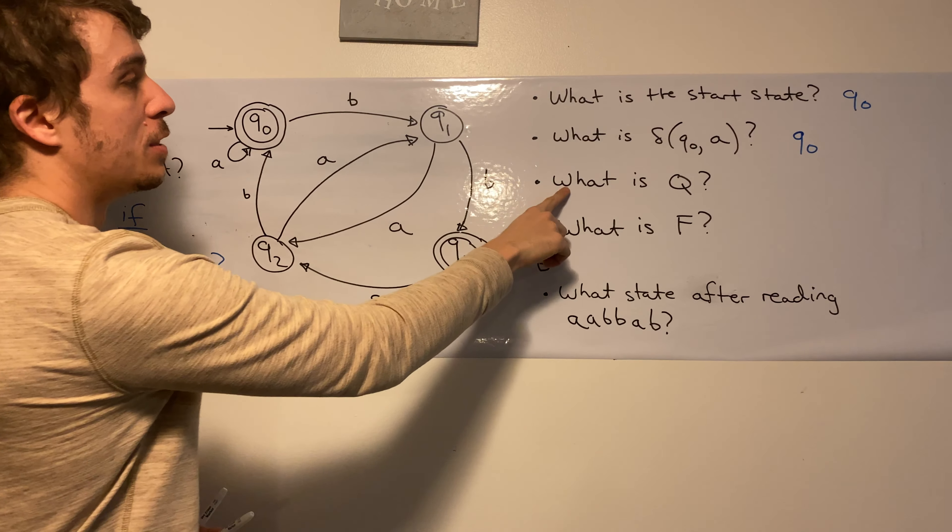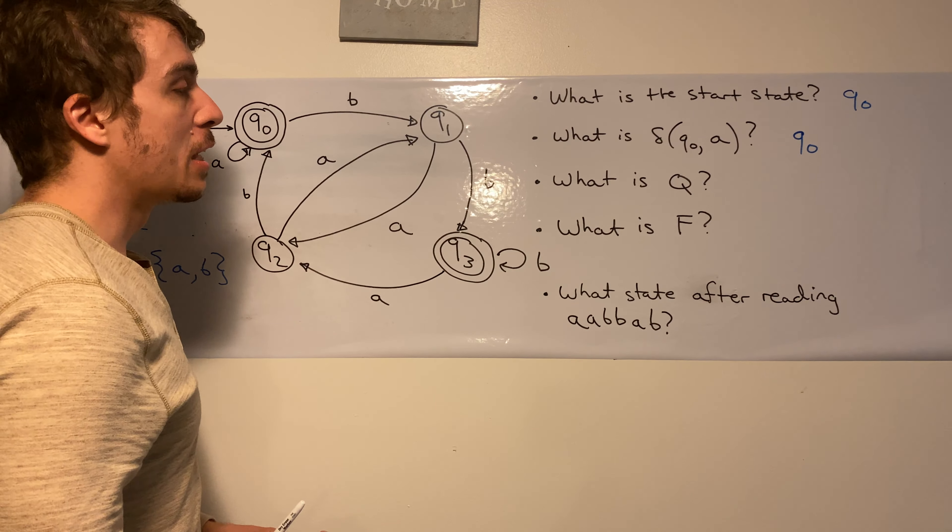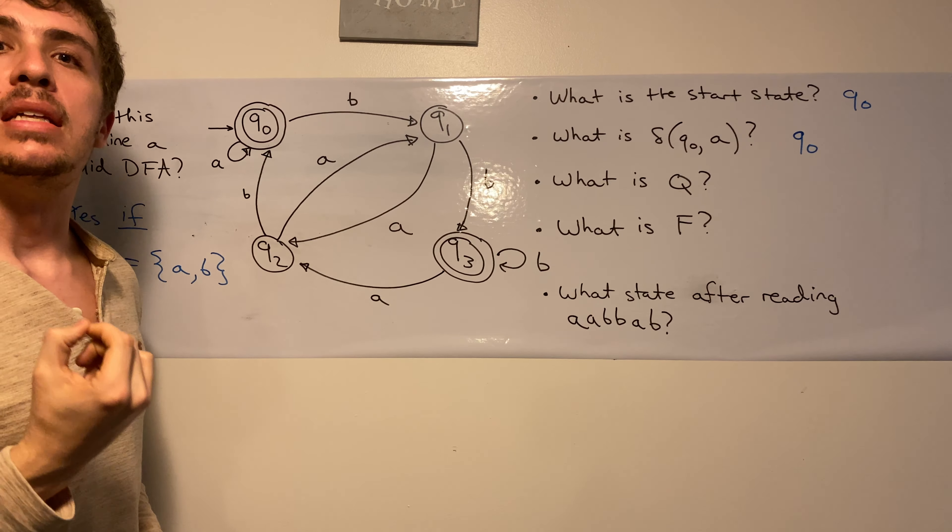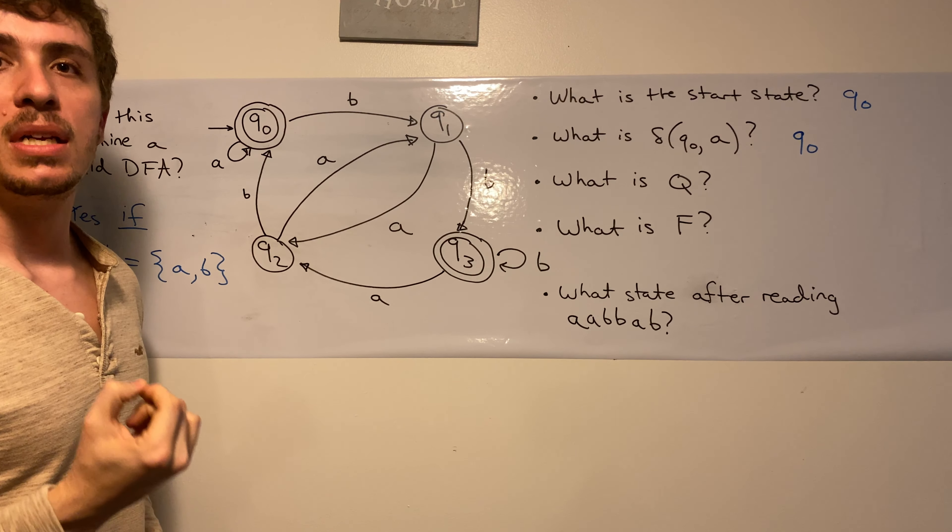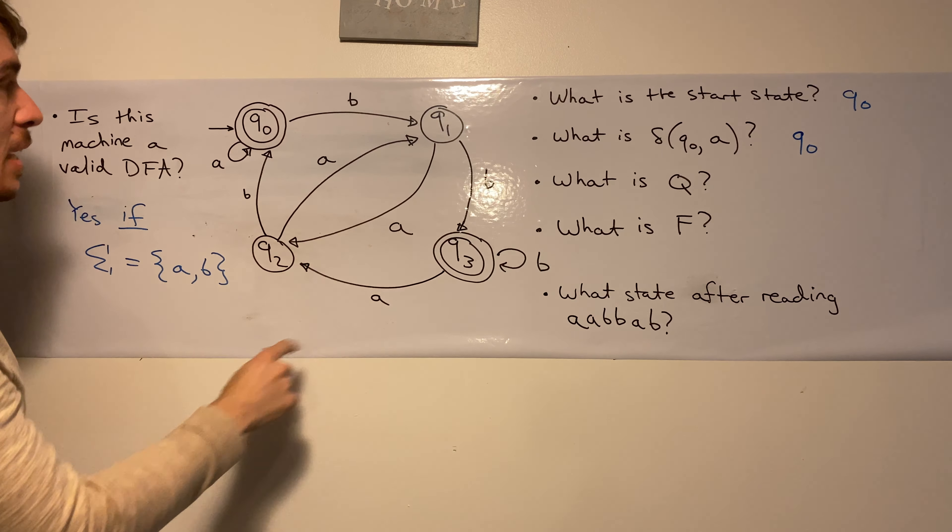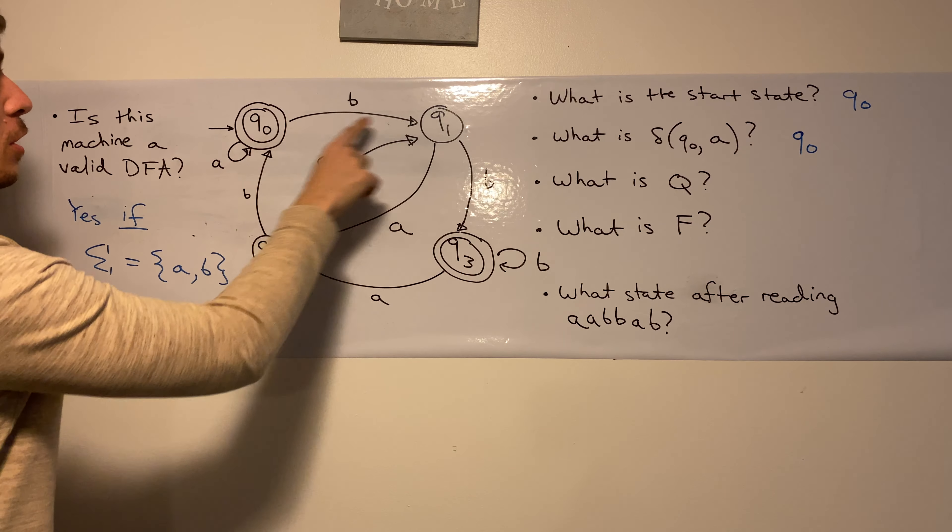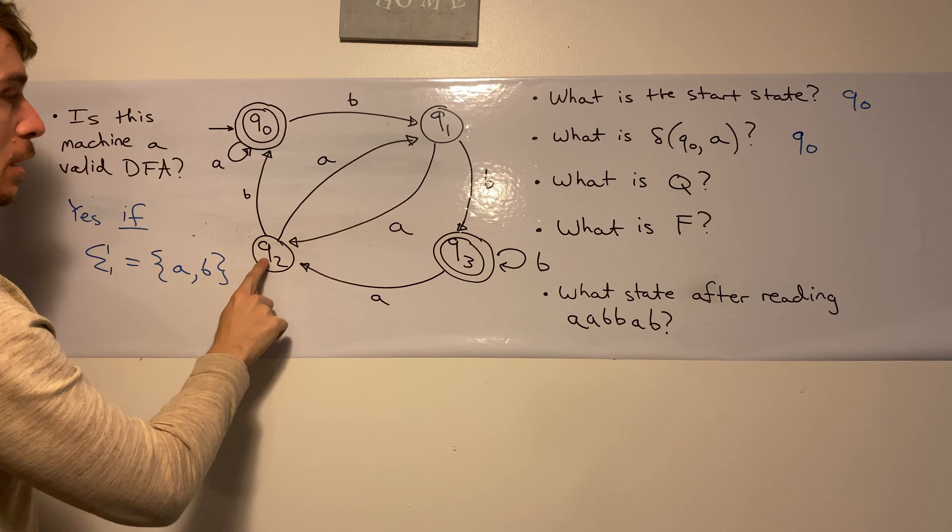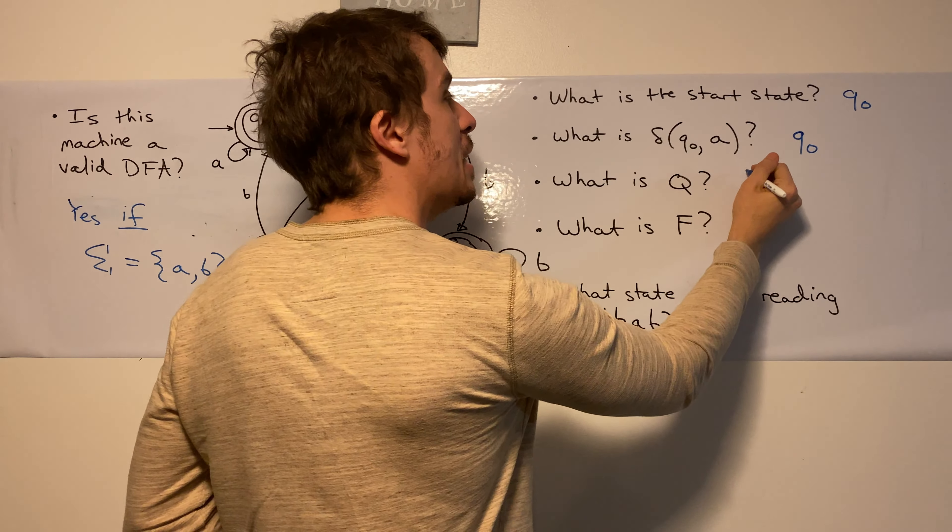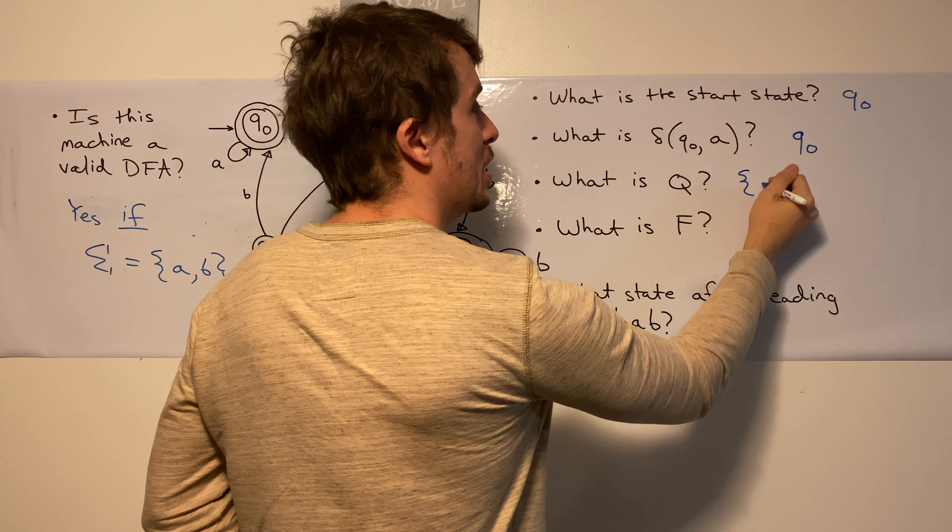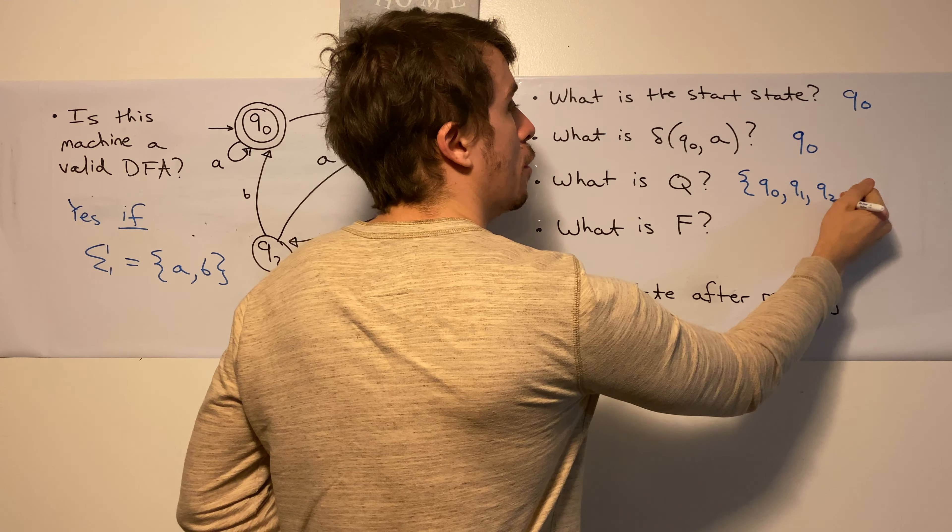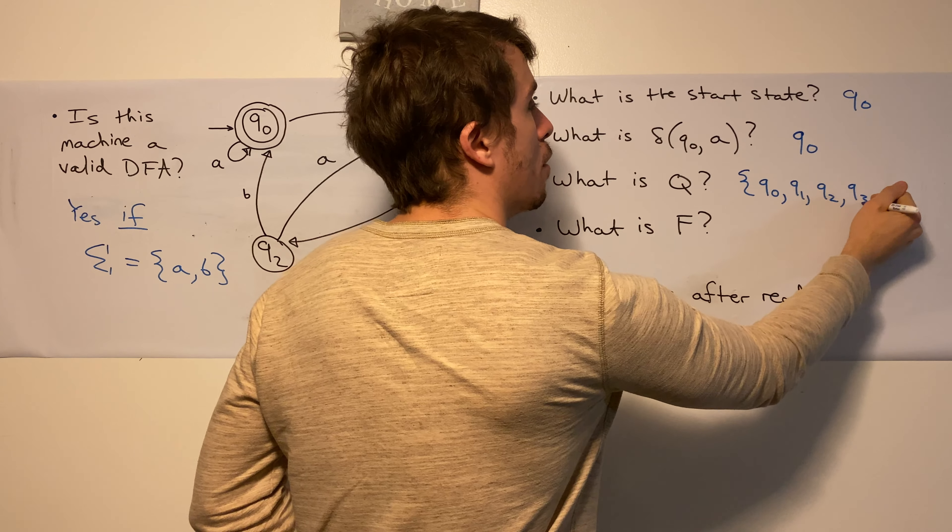Okay, so now let's look at this question. What is Q? So capital Q is, remember, the set of states in the DFA. So what are the states in here? Well, it's everything with a circle. Q0, Q1, Q2, Q3. So the set of states is the set containing Q0, Q1, Q2, Q3.